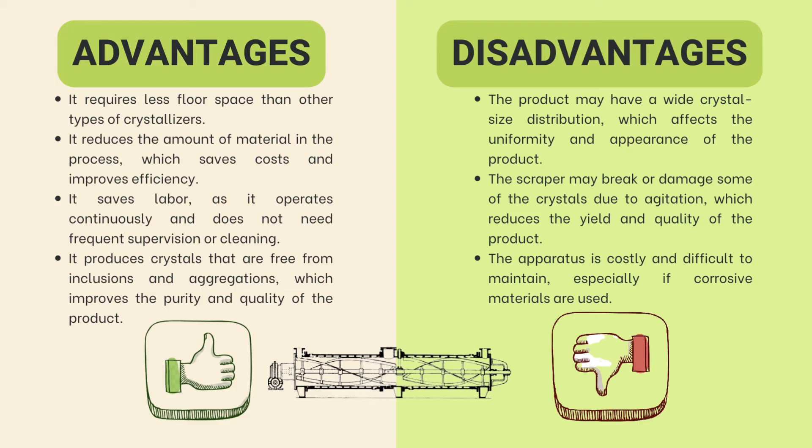The disadvantages of the Swenson Walker crystallizer are as follows. First, the range of crystal size distribution is very wide, which affects the appearance and uniformity of the product. Second, the yield of crystals may be altered because of the scraping operation — breaking of the scraper due to agitation raises concerns about overall yield and quality. Third, maintenance is very difficult and the overall apparatus is very costly, with maintenance becoming especially challenging when dealing with corrosive materials.